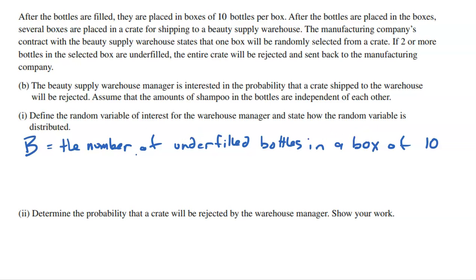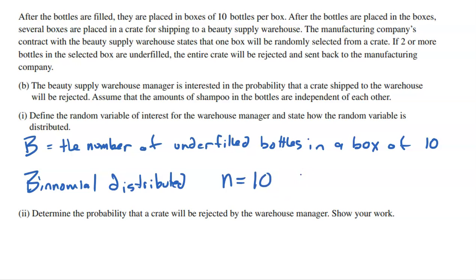This is a binomial variable following a binomial distribution. We have a fixed number of bottles — 10 — and a probability of being underfilled of 0.0062 from Part A. Those are the two key ingredients for a binomial distribution. The bottles must be independent of each other (stated in the problem), the probability stays constant at 0.0062 bottle to bottle, and each bottle is either underfilled (success) or not (failure).